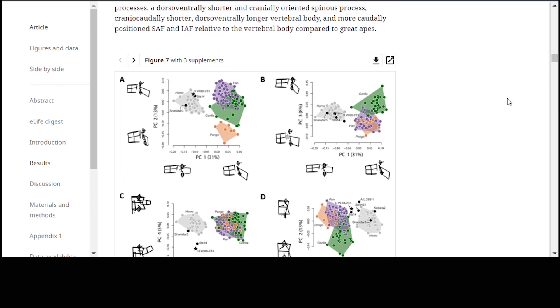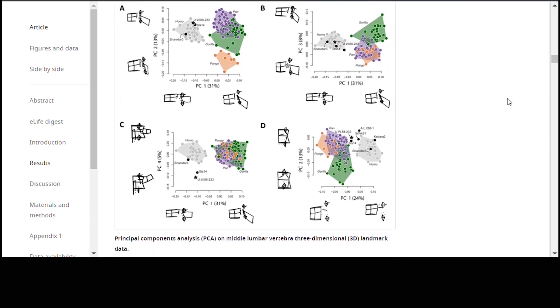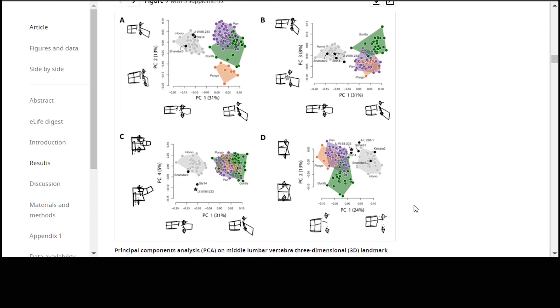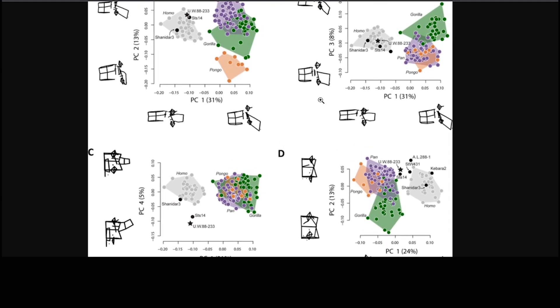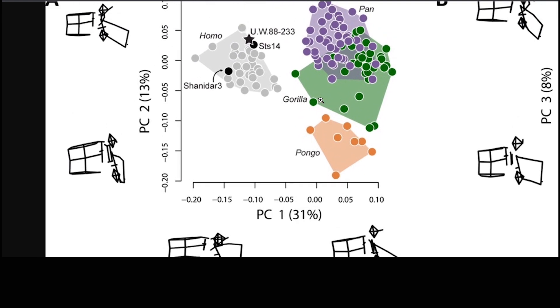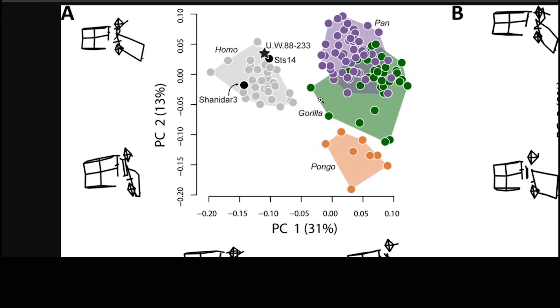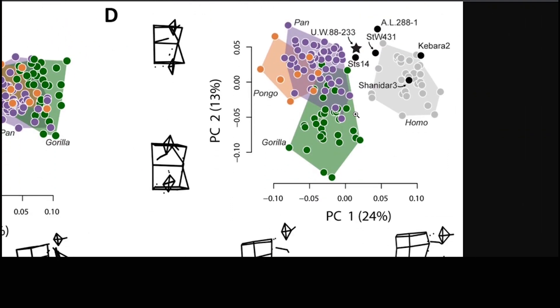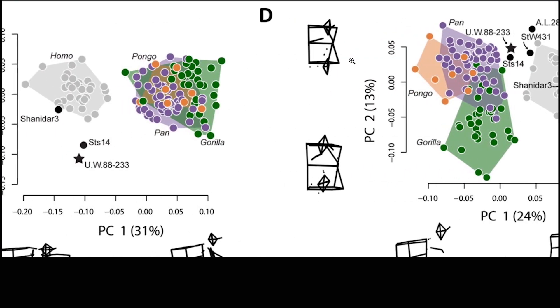This is a really cool figure here. This, you can see here, principal components analysis on middle lumbar vertebrae three-dimensional landmark data. Let's click on this to make it a little bigger. So, based on this part here, what we see in this analysis is that the vertebrae falls within the range of humans here and not within the range of chimpanzees and gorillas and orangutans. And basically,